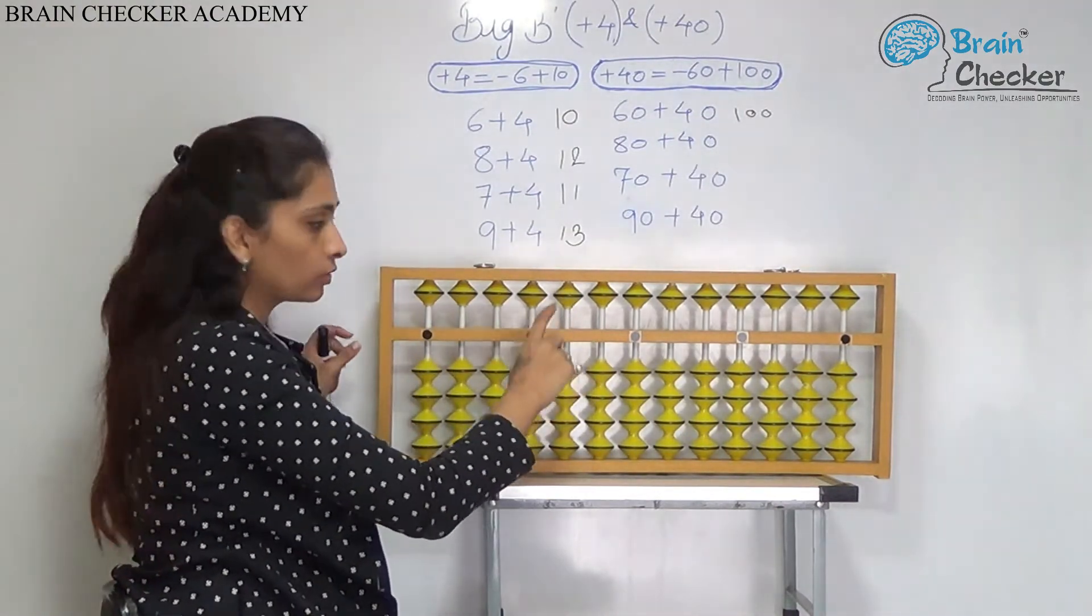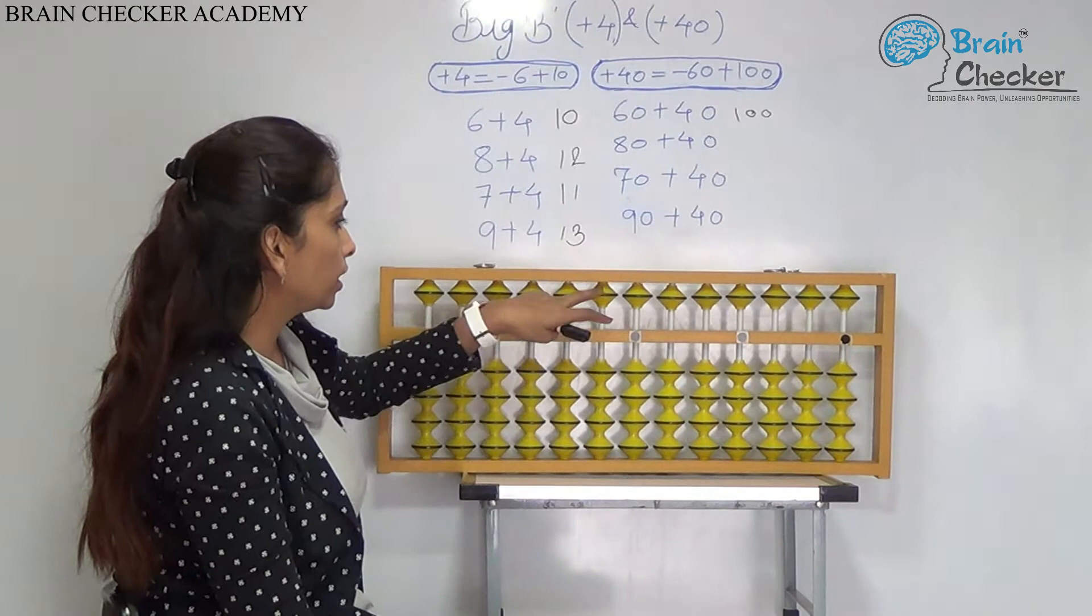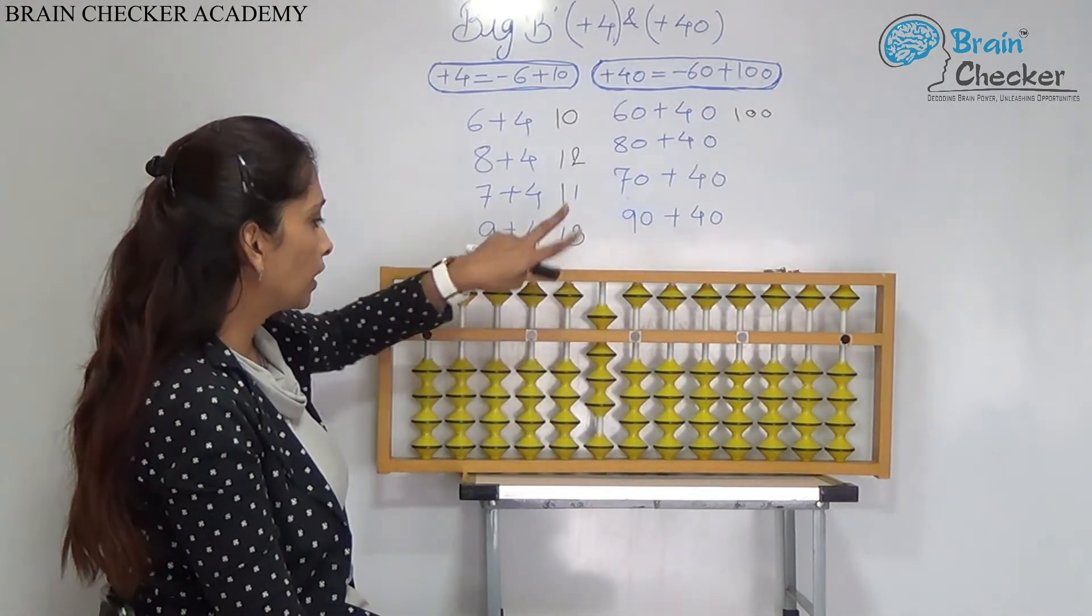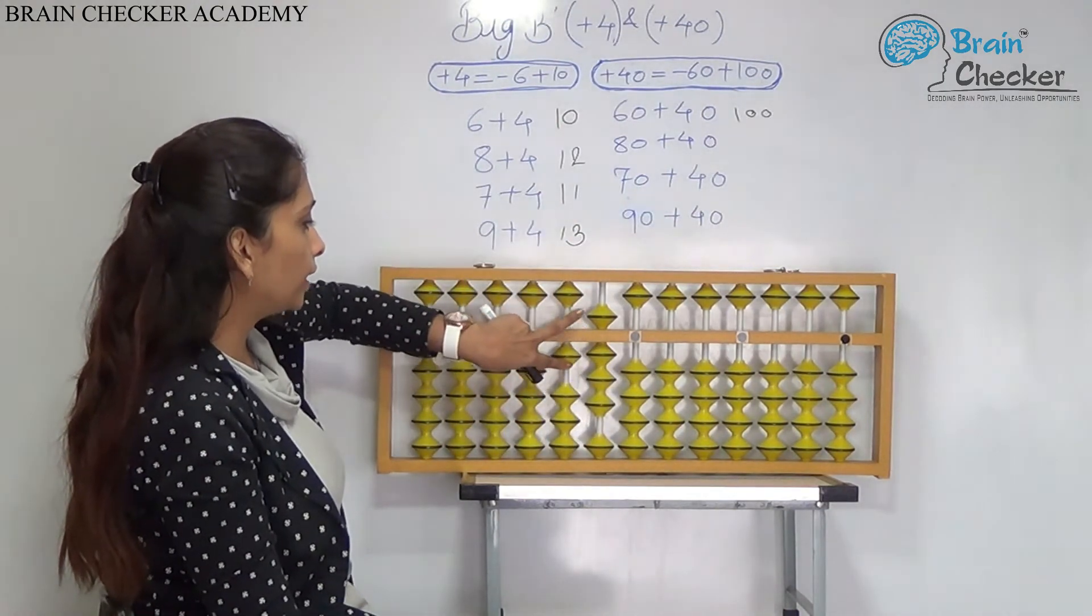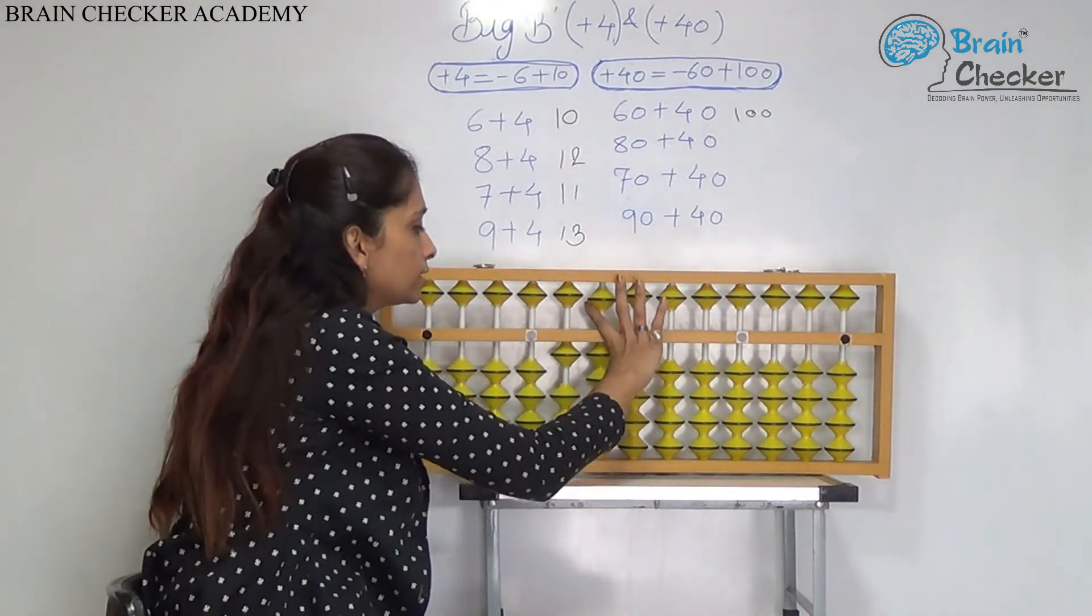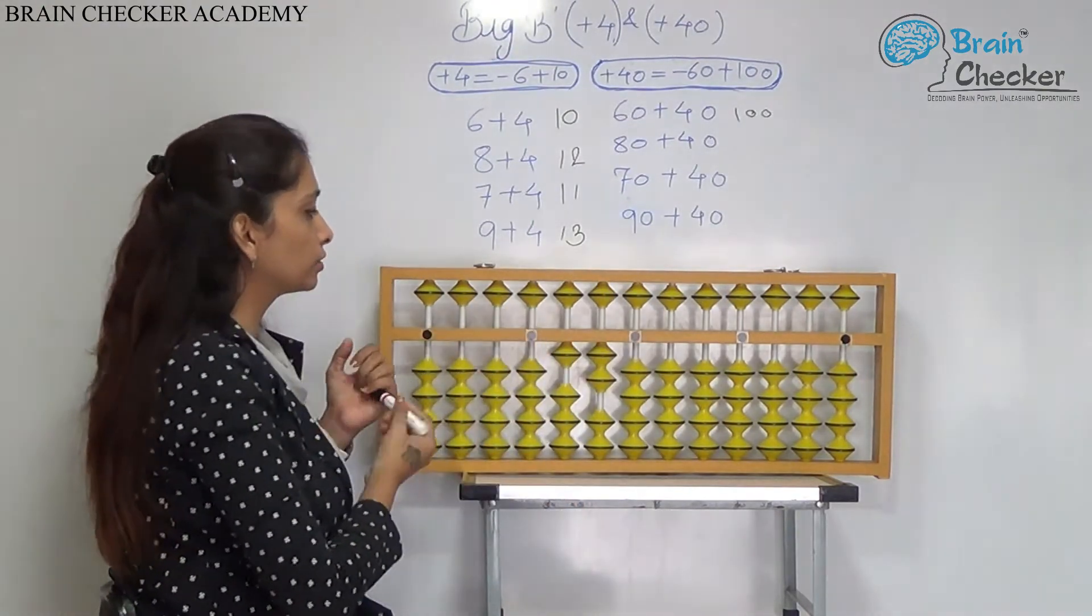Next, 80 plus 40. On the 10th rod, I have taken the 80 add 40. Add 100 less 60. So, the answer is 120.